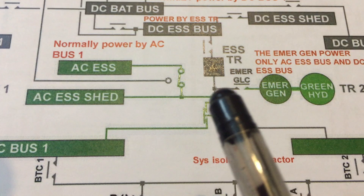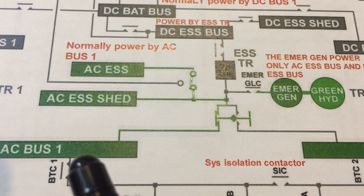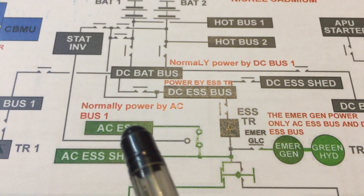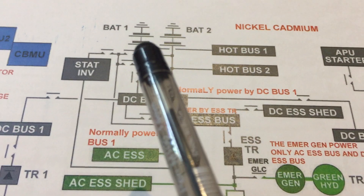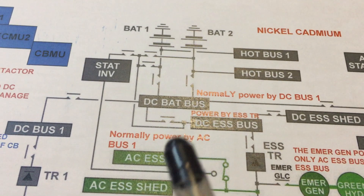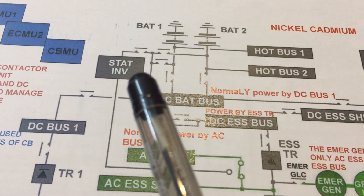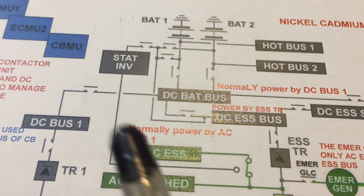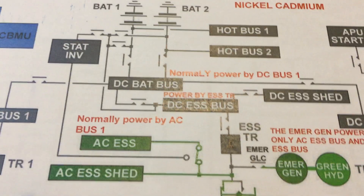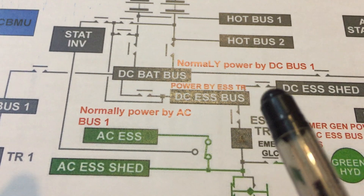In the emergency configuration, the emergency generator powers the essential AC by closing the appropriate contactors. If we also lose the emergency generator, the essential AC can still be powered by battery number one or battery number two. Since the battery provides DC and the essential AC bus needs AC, we have a static inverter — its function is to convert DC to AC. We have only one static inverter, located in the avionics compartment.